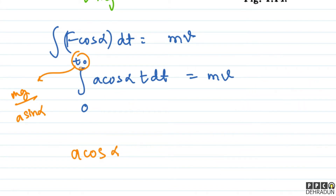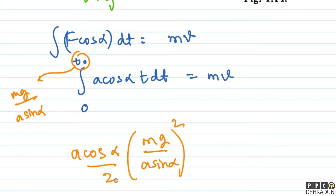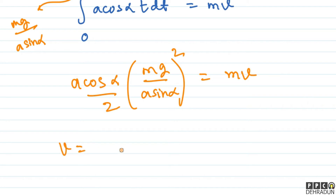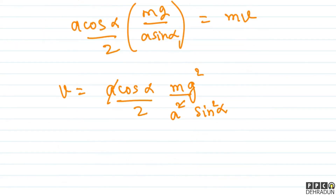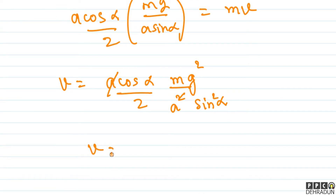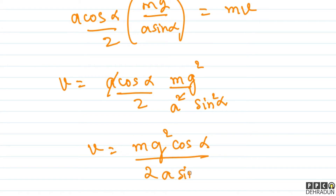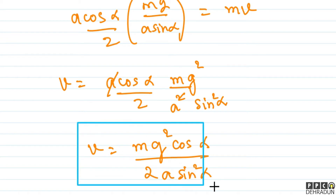a·cosα·t dt का integration हो जाएगा t²/2। यहां पर t की value t₀ रखेंगे, तो यह हो जाएगा a·cosα · (t₀²/2) = m·v. t₀ = mg/(a·sinα) रखने पर, v की value हमारे पास आ जाएगी: a·cosα/(2m) × m²g²/(a²·sin²α), जो simplify होकर बनता है mg²·cosα / (2a·sin²α).